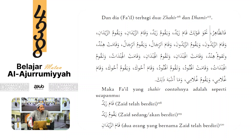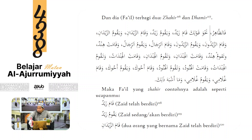Wa qama rijalun - contoh jama' taksir, fa'il ar-rijalun tanda rafa'nya dommah. Wa qamat Hindun - perempuan, tambahkan ta' pada fi'ilnya untuk membedakan laki-laki dan perempuan. Fa'il Hindun tanda rafa'nya dommah. Wa qamat al-hindani - fa'il al-hindani tanda rafa'nya alif karena isim mutsanna. Wa qamat al-hindatu - jama' mu'annats salim, tanda rafa'nya dommah.